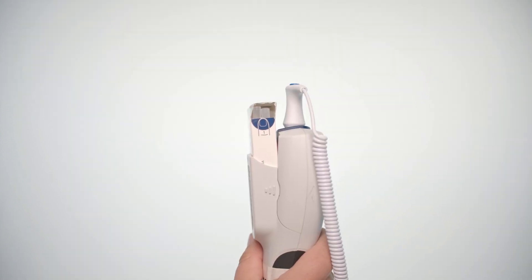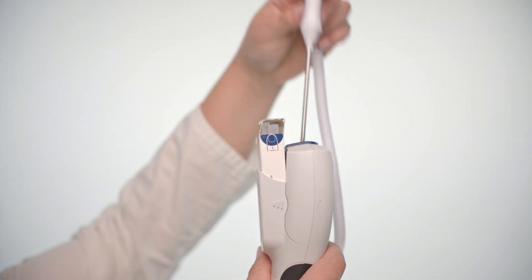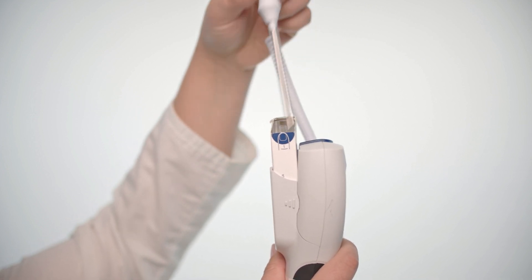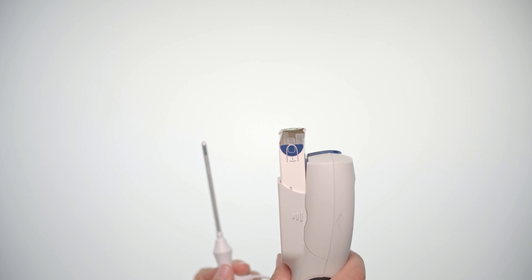Attach the blue oral probe stem to the thermometer. Slide a disposable cover over the temperature probe. Ask Fred to open his mouth and insert the thermometer into one of Fred's posterior sublingual pockets at the base of his tongue, not in front of it. Ask Fred to keep his lips closed. Wait 20 to 30 seconds or until the thermometer chimes.